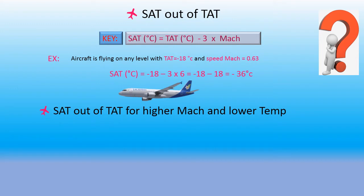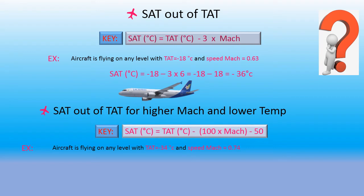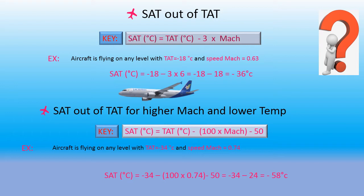Next, static temperature out of total temperature for higher Mach and lower temperature. The example is: aircraft flying on any level with total temperature minus 34 degrees Celsius — this is a lower temperature — and speed Mach 0.74. Refer to the key: static temperature in degrees Celsius equals total temperature in degrees Celsius minus 100 multiplied by Mach number. Compared to the example: equals minus 34 degrees minus 100 multiplied by 0.74, then minus by 50, equals minus 34 and minus 24.